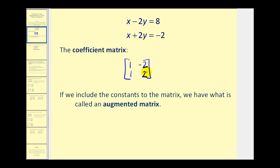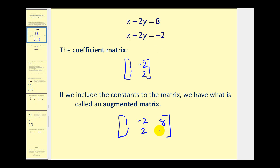Now if we take the coefficient matrix and include the constants, we have what's called an augmented matrix. Adding the constant terms makes this matrix a 2 by 3 matrix, where the first row is 1, negative 2, and positive 8, and the second row is 1, 2, and negative 2. Note that the constants must be on the other side of the equal sign before we place them in the augmented matrix. Often a vertical line is placed between the coefficients and the constant terms.